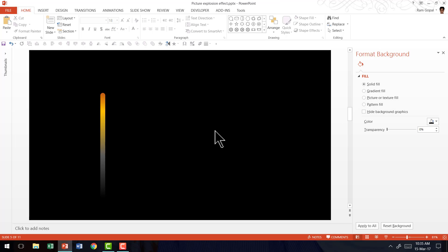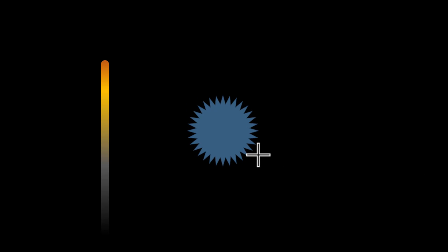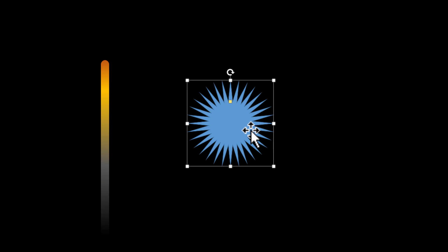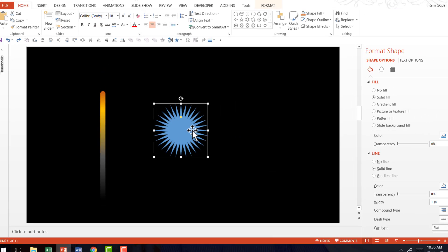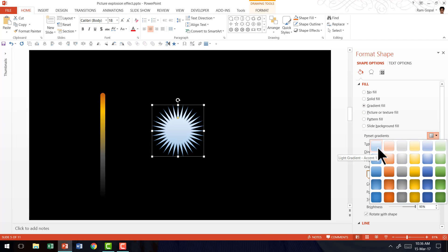Now the next step is to draw the inner explosion. So let us go to the Auto Shapes menu. Under Stars and Banners I am going to pick up the tool called 32-point star. I am going to hold the Shift button down as I draw the star, then hold the yellow handle in the middle and move it to the center so that the star looks more like an explosion. I am going to make it slightly bigger, then apply gradient fill for this shape.